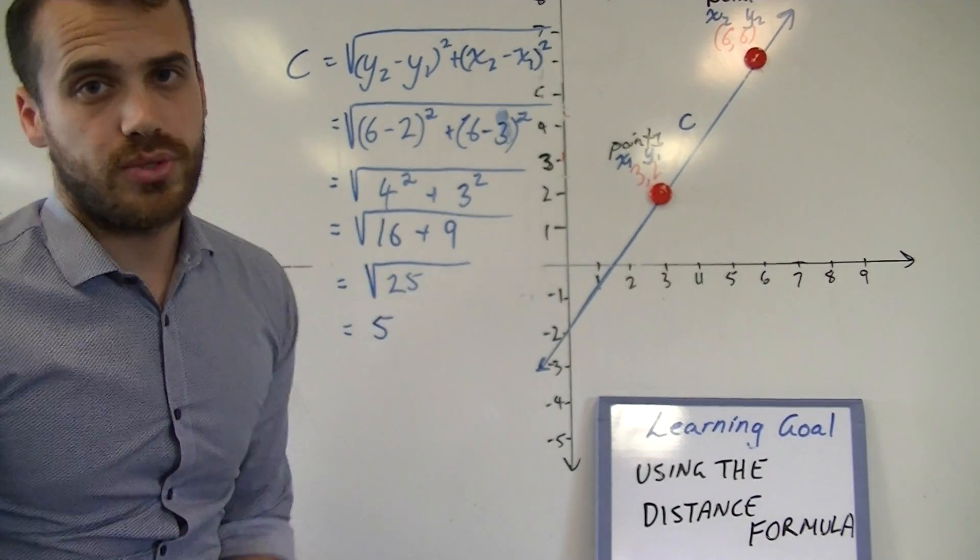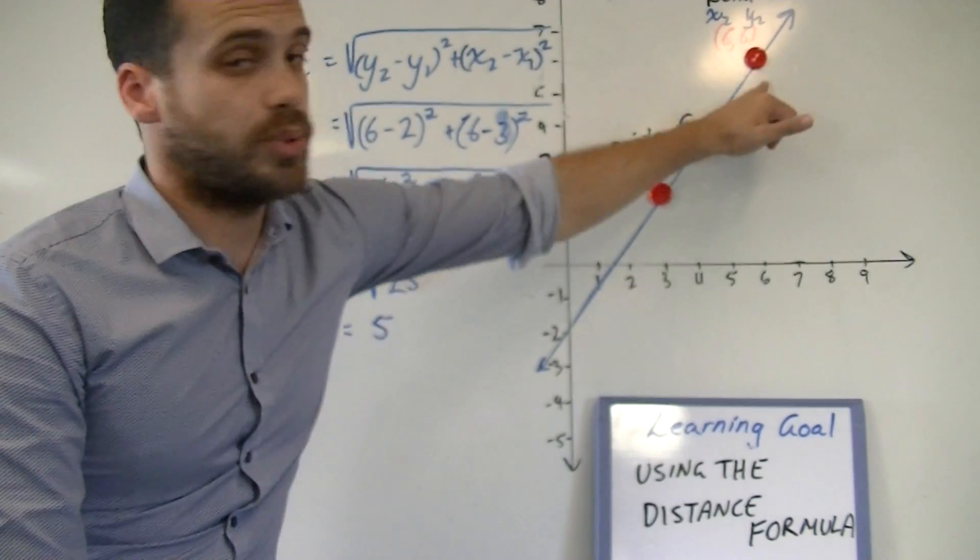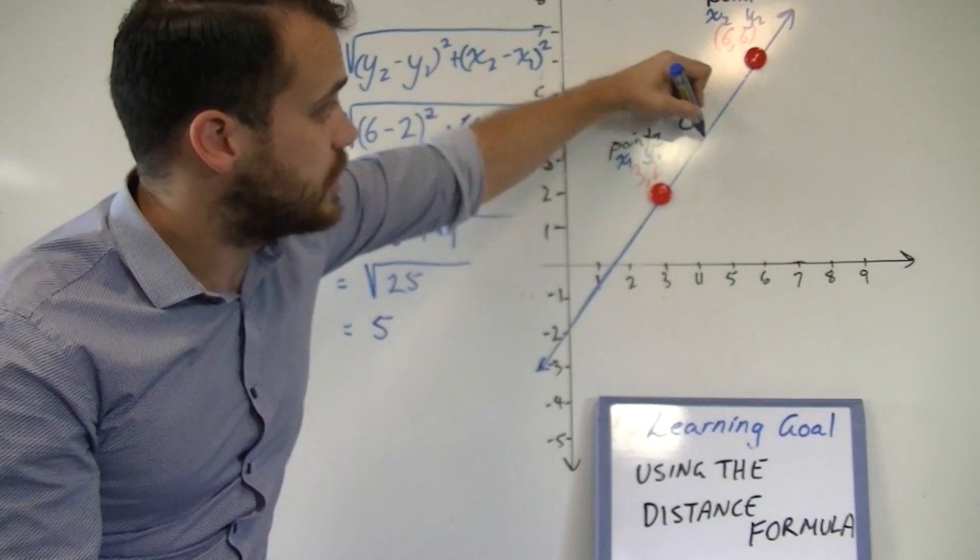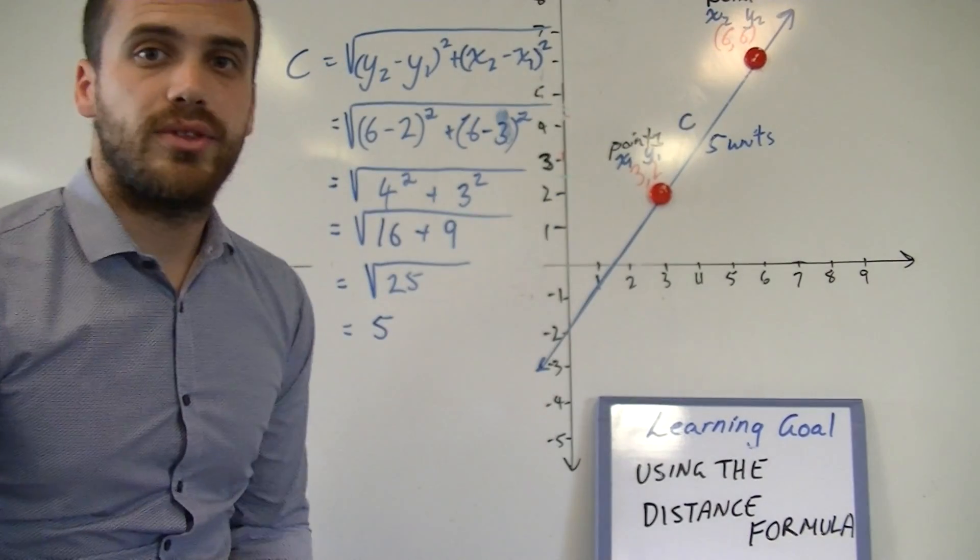All of this working has now served to tell us that the distance between those two points is five units. That length is five units. That's using the distance formula to find the distance between two points.